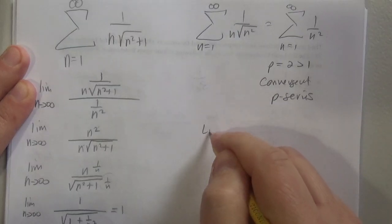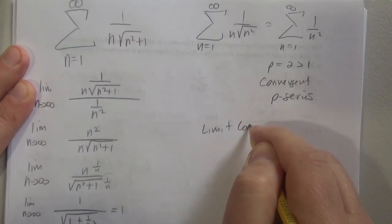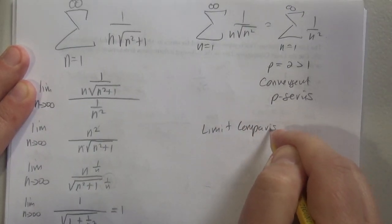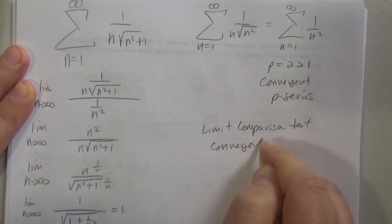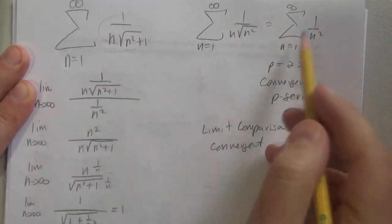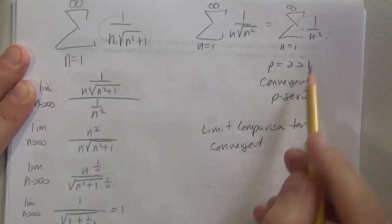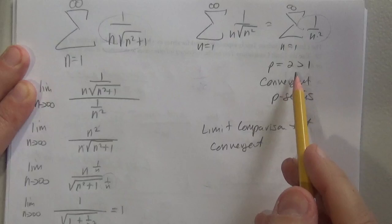So therefore by the limit comparison test, this series is convergent because this one is convergent. Why is this one convergent? By the p-series, because p is equal to 2.